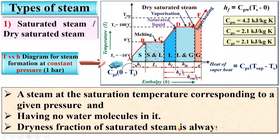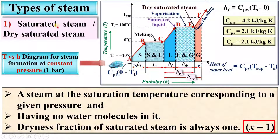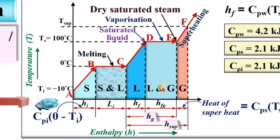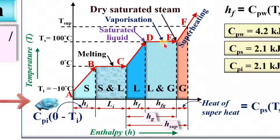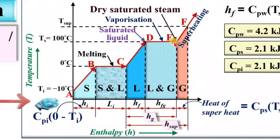The dryness fraction of the saturated steam is always 1, denoted by small x. In this figure, exactly at point E the steam is dry saturated steam, because at point D the evaporation starts. Gradually the water molecules start converting from liquid to gaseous phase, and exactly at point E it is completely converted into gaseous phase. So at point E there is no water particles — that is dry saturated steam.